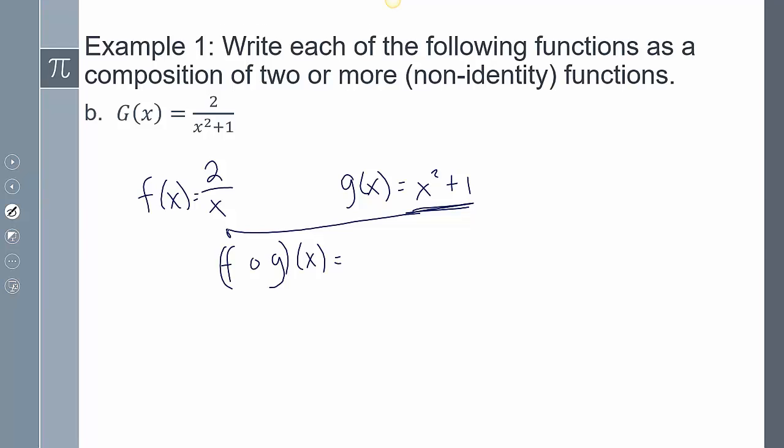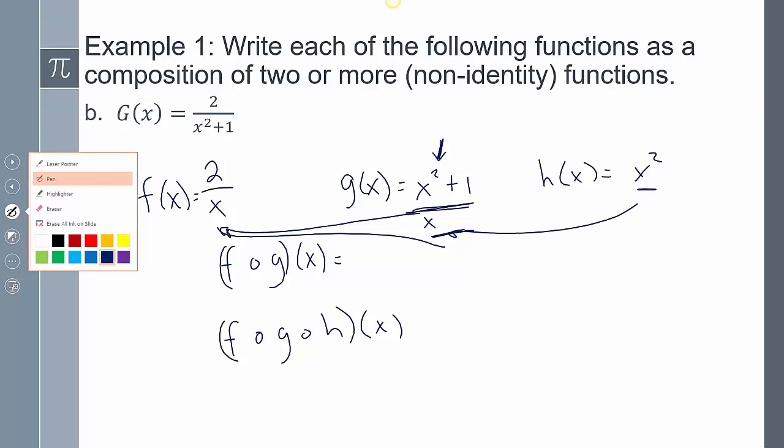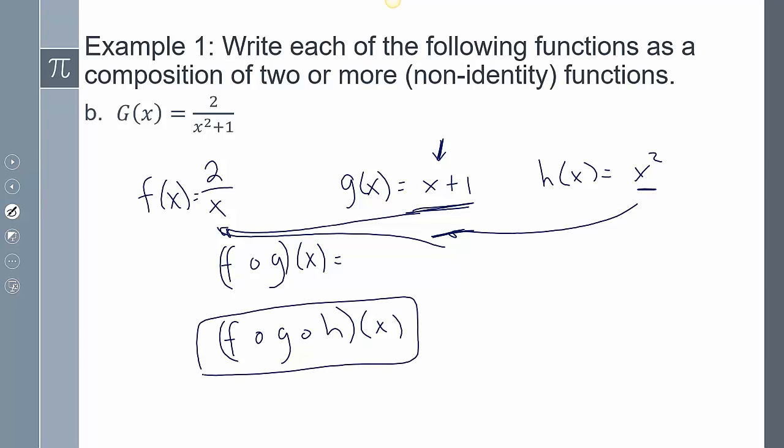Another way, you could even take this a step further because this is not written in terms of x. I could also say h of x equals x squared, and so therefore this would now have to be x. So then I could say f of g of h of x. I have to take the x squared, plug it into here, and then I take this entire statement and plug it into here. I would say both of those answers would have been acceptable. In this instance, this is now a composition of three or more functions.